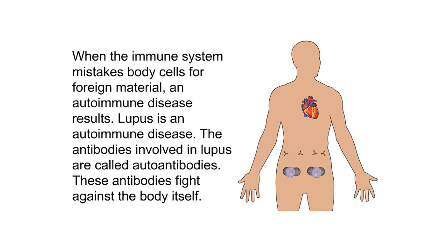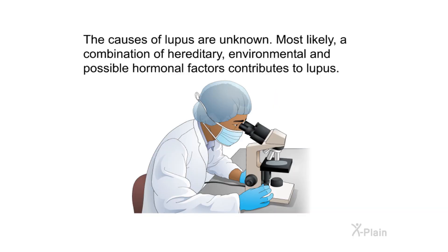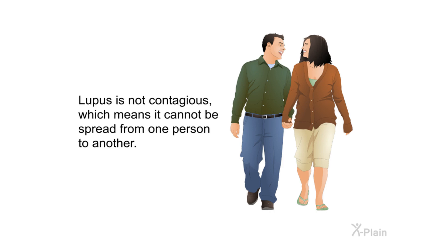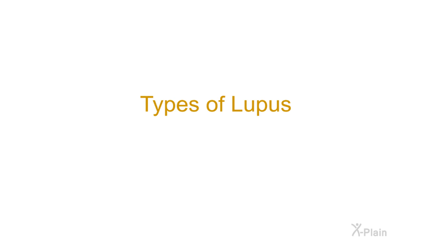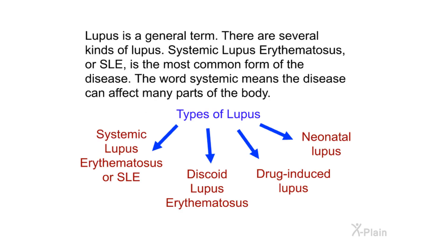When the immune system mistakes body cells for foreign material, an autoimmune disease results. Lupus is an autoimmune disease. The antibodies involved in lupus are called autoantibodies — these antibodies fight against the body itself. The causes of lupus are unknown. Most likely a combination of hereditary, environmental, and possible hormonal factors contributes to lupus. Lupus is not contagious, which means it cannot be spread from one person to another.